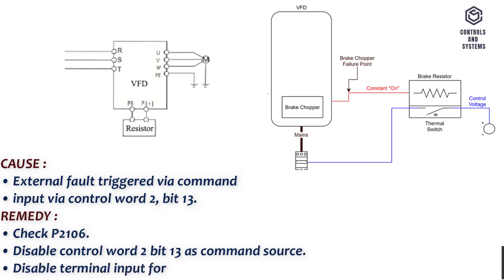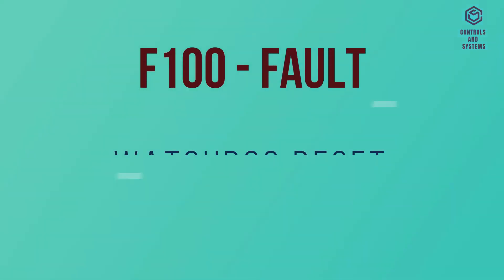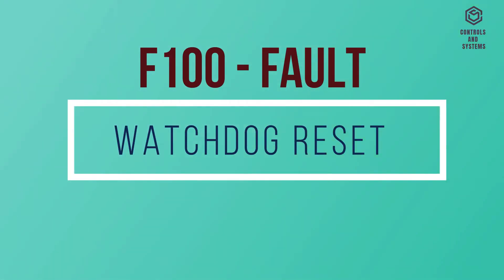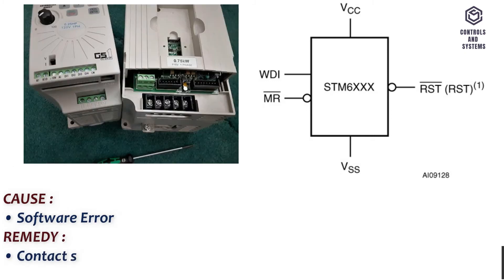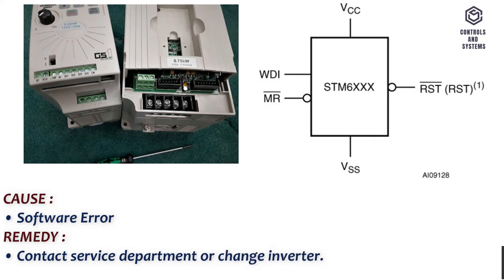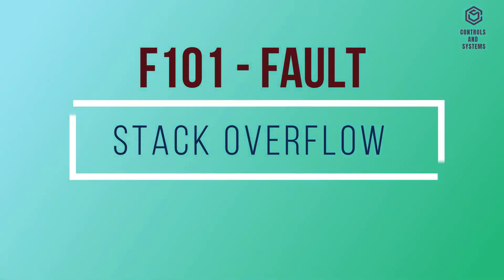Disable terminal input for fault trigger. F100 Fault: watchdog reset. Cause: software error. Remedy: contact service department or change inverter.